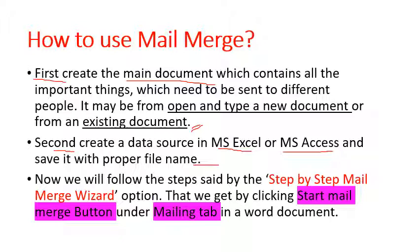Now we follow the steps of the step-by-step mail merge wizard option, which we get by clicking the Start Mail Merge button under the Mailings tab in the Word document. We go to the Mailings tab, click Start Mail Merge button, and from the drop-down, select step by step mail merge wizard.